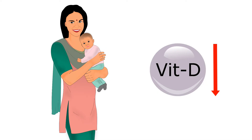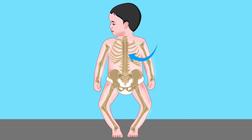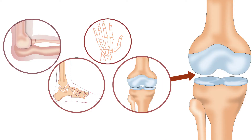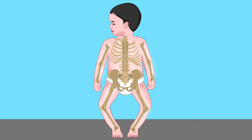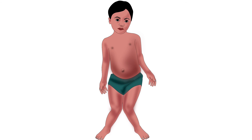Babies born to mothers with vitamin D deficiency will also be deficient. Vitamin D deficiency can cause rickets in infants and children. Rickets is a disorder of the skeletal system in which growth gets stunted and there are changes in the shape of the spine. Other signs include sunken ribs, a protruding forehead, bow-shaped bent legs, and widening of the wrist, elbow, knee, and ankle joints. Children with rickets are also at a risk of infectious disease, delay in tooth eruption, a pot belly, and an abnormal walk.